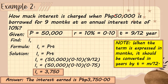Note: When the term is expressed in months, it should be converted to years using t = m/12, where m is the number of months divided by 12. This is because there are 12 months in a year.